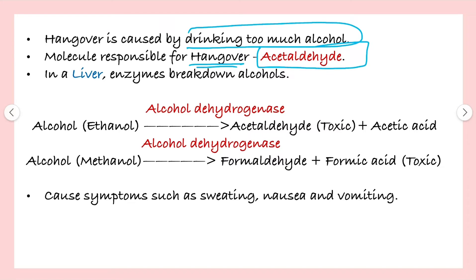In the liver, the alcohol gets broken down. Drinks which contain ethanol — it gets broken down into acetaldehyde and acetic acid in the presence of an enzyme called alcohol dehydrogenase.